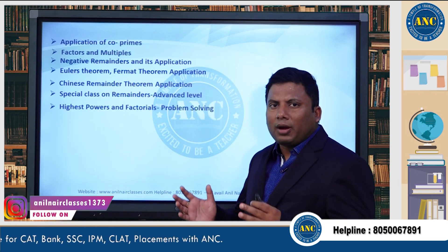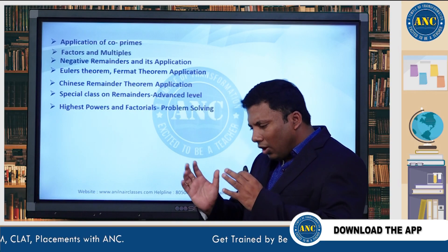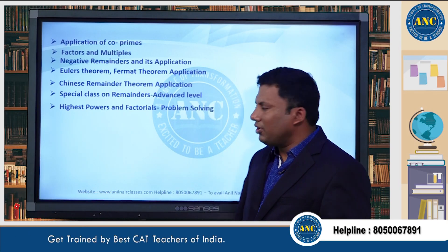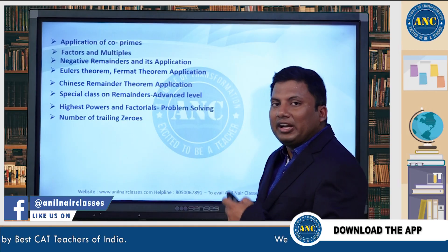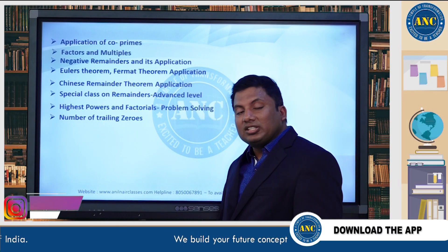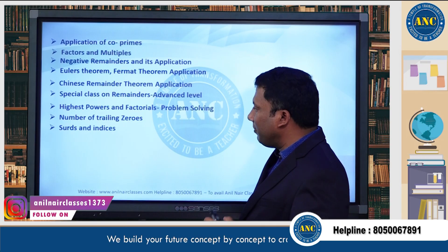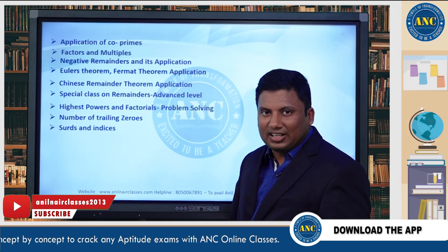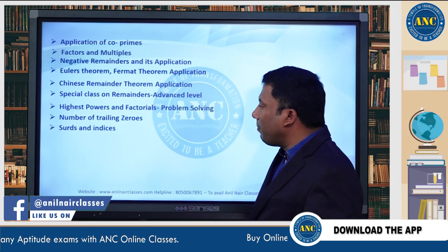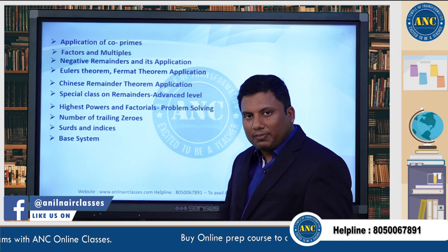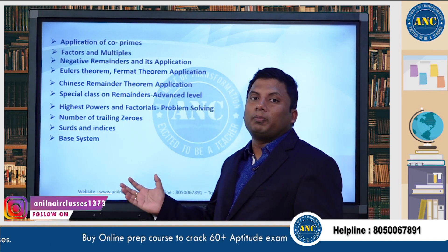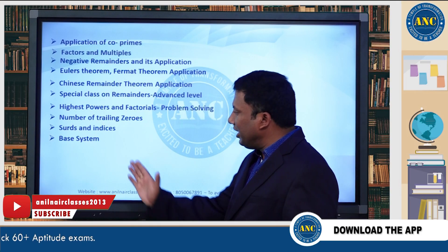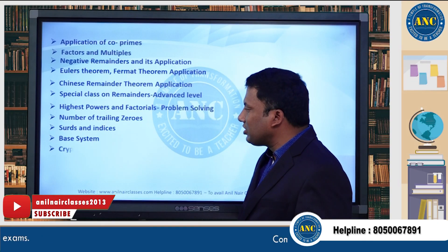Then comes remainders — advanced level problems: how to find 2^2001 divided by 2001, how to solve very difficult questions using answer options, and problems based on a^n ± b^n. Then comes highest powers — how to find the highest power for a prime number, for a composite number, and when factorials are added. How to find the number of trailing zeros, and what if the number of trailing zeros are given — how to find the given number. Then surds and indices: what is a surd, how to add two surds, how to find the square root of a surd, how to simplify complicated surds. Then base system: converting from decimal to binary, decimal to octal, decimal to hexadecimal, and finding in which base system a given equation holds — at basic, intermediate, and advanced levels.